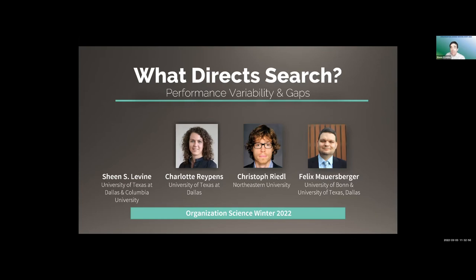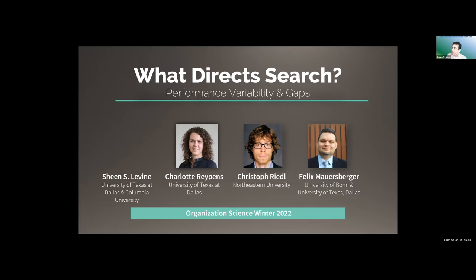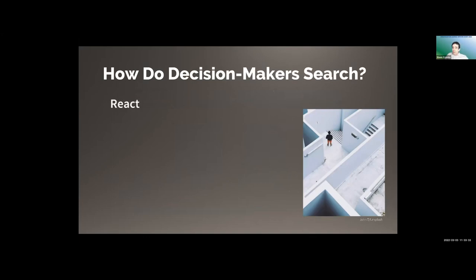What is direct search? If you ask any good organizational scholar, they will give you the orthodox answer: disappointment. We try different things, we get feedback from the environment, and if we're disappointed we change course and explore. If we get positive feedback, we keep doing the same thing and exploit. This is indeed orthodox theory. What I would like to propose today is that there may be other processes at play. This is part of a large research project involving many people around the world, and I will focus on the role of performance variability — or performance stability, two sides of the same coin — in driving search.